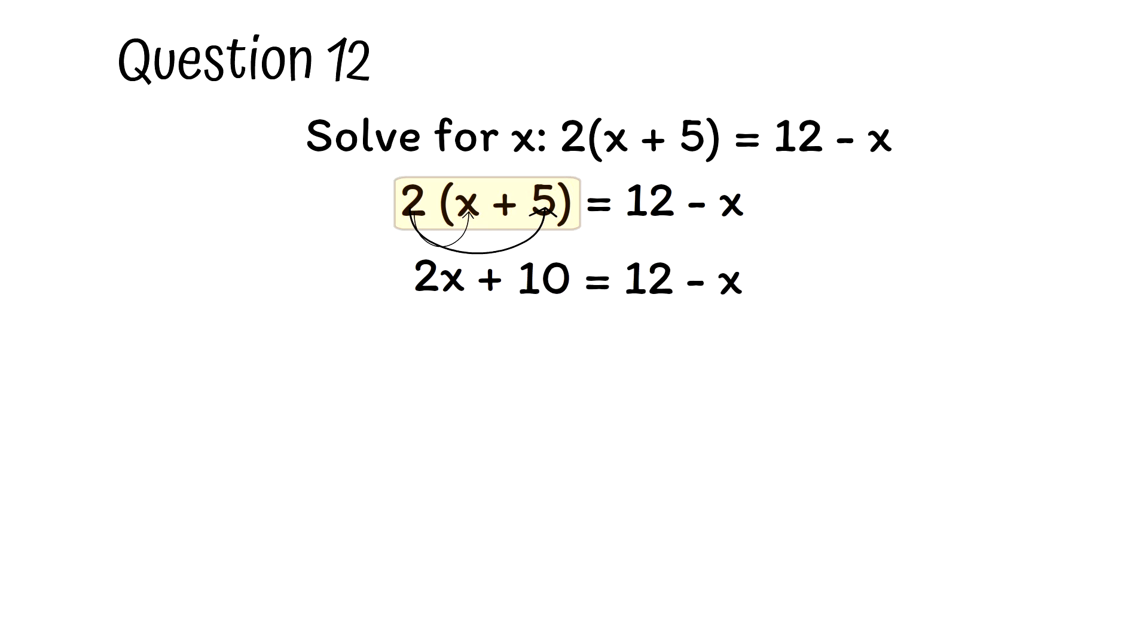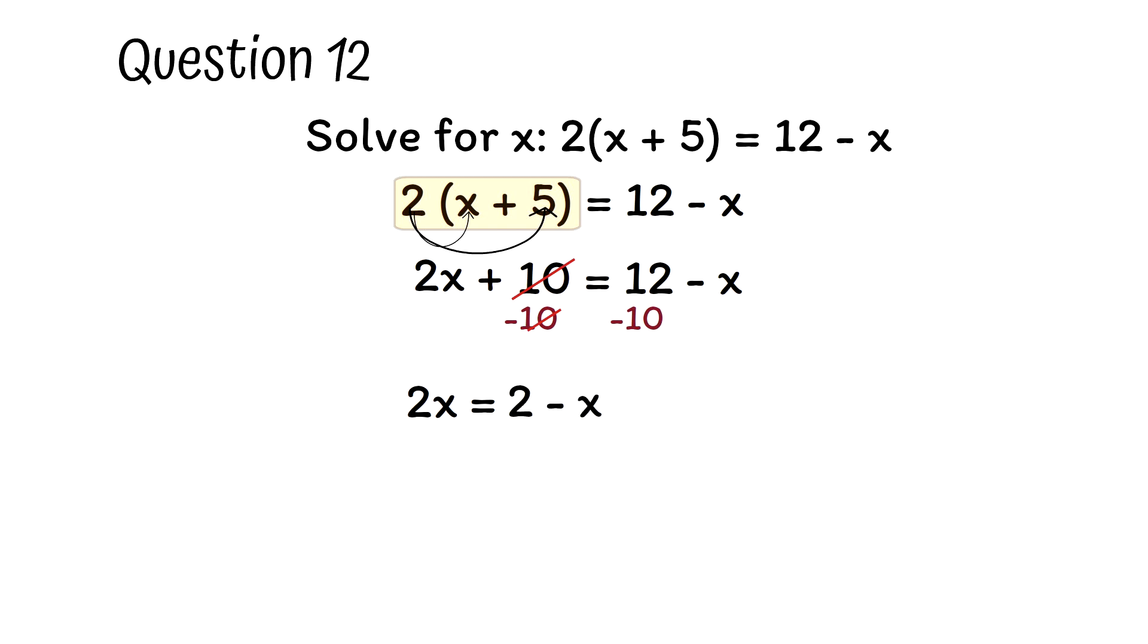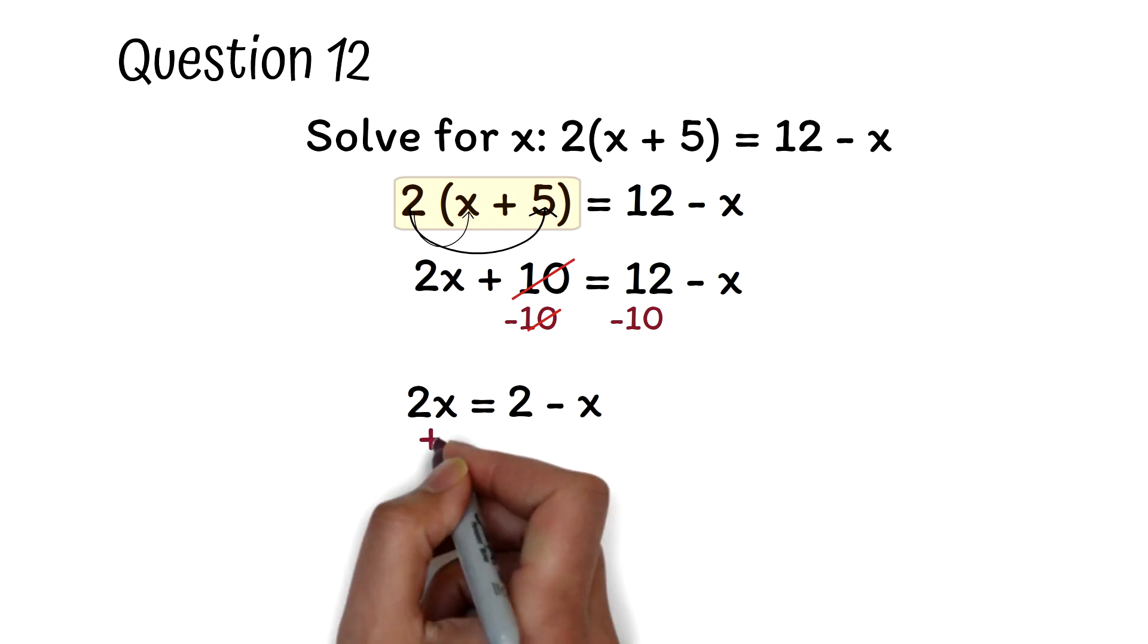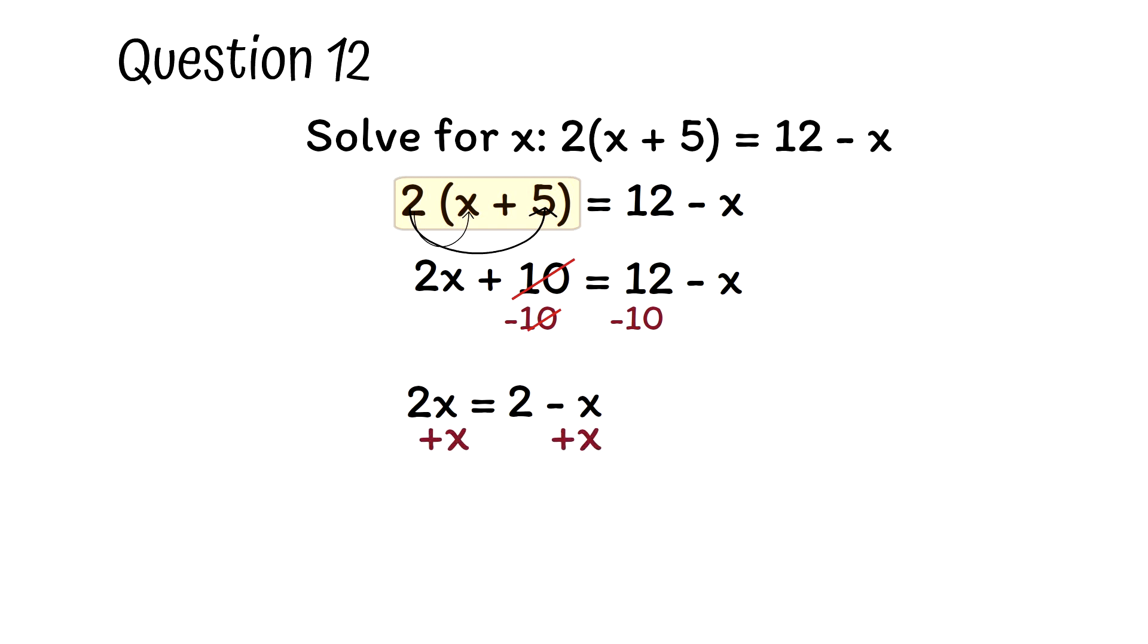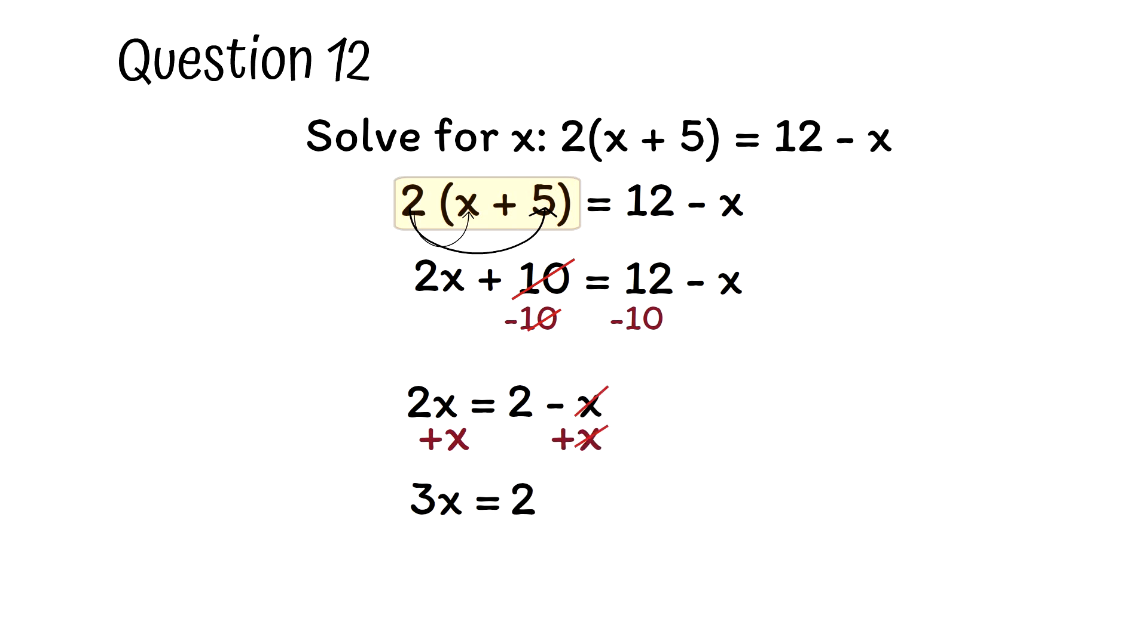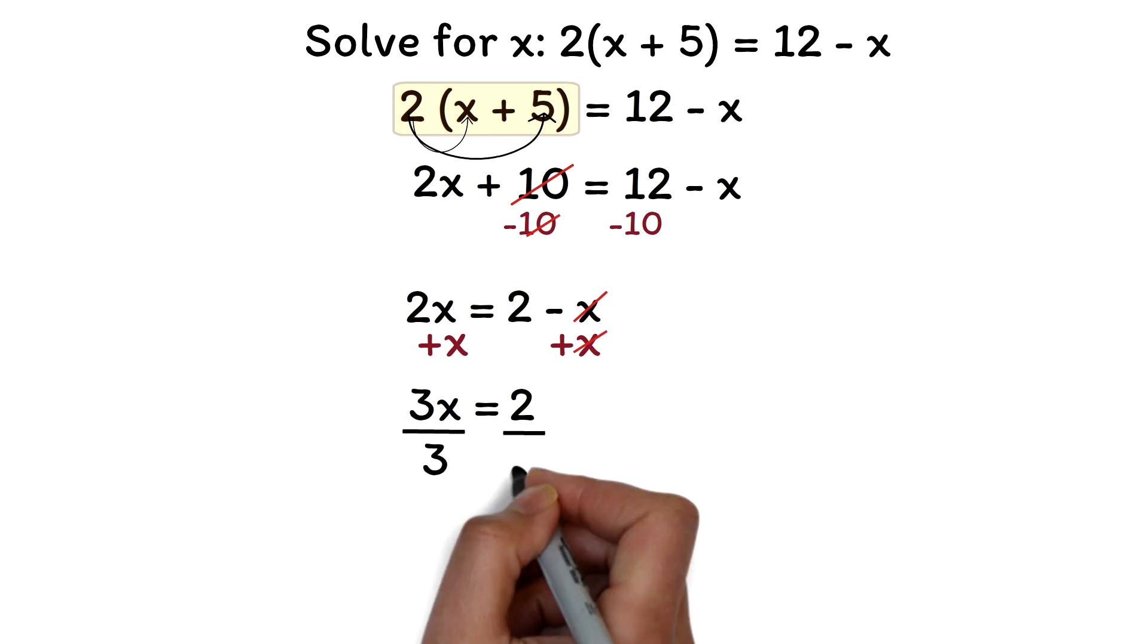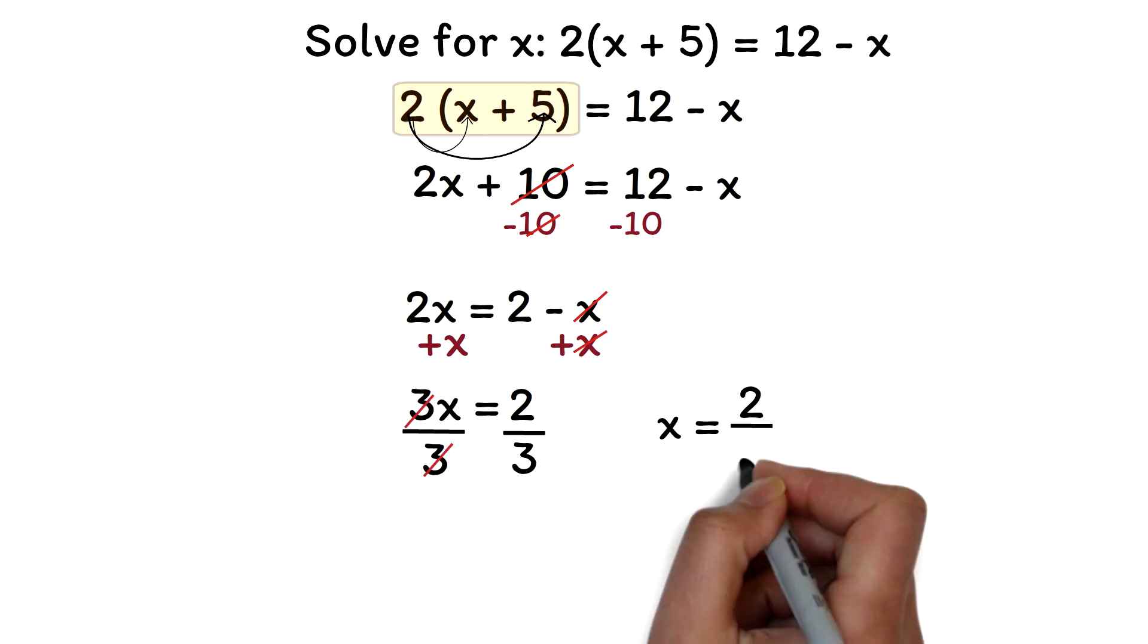Now to find x, we can subtract 10 from both sides. At the left side of the equation, negative 10 will cancel 10 leaving 2x. And at the right side of the equation, 12 minus 10 is 2 minus x. To find x by itself, we add x to both sides of the equation. At the left side, 2x plus x is 3x, and at the right side, positive x will cancel negative x remaining 2. Now we can divide both sides by the coefficient of x, which is 3. 3 will cancel 3 leaving x equals 2/3.